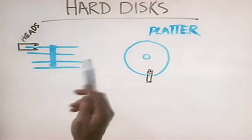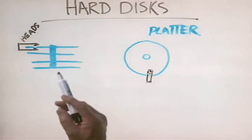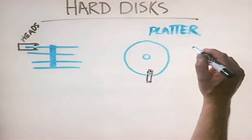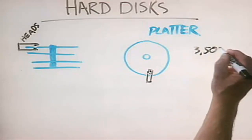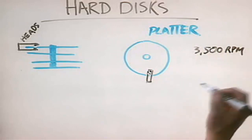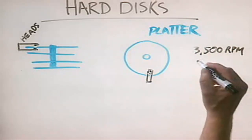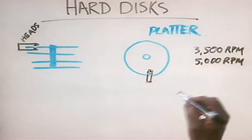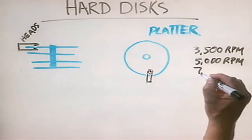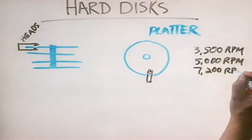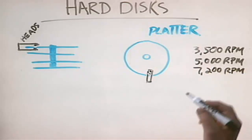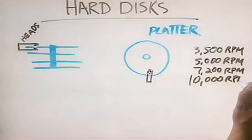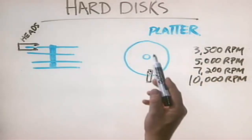When the platter spins — and in a modern hard disk drive it spins extremely fast — a really cheap old drive spins somewhere around 3,500 RPMs. A mid-level quality drive may spin around 5,000 RPMs. A medium high-end drive spins around 7,200 RPMs. And on a really high-end, more expensive drive, it spins at 10,000 RPMs.